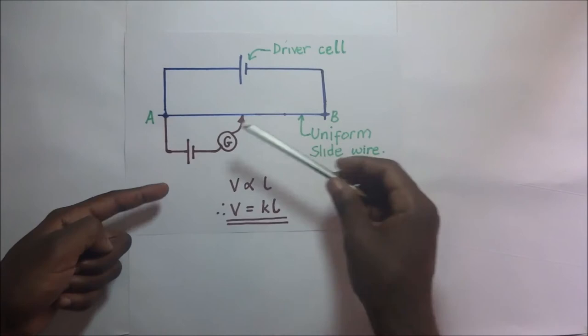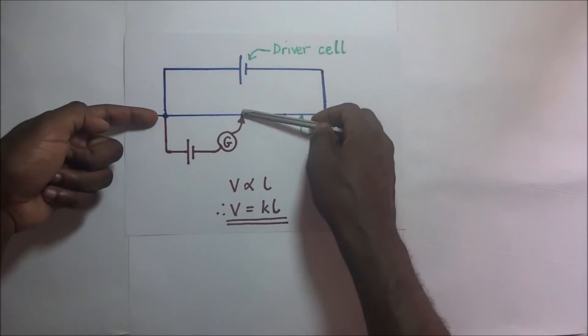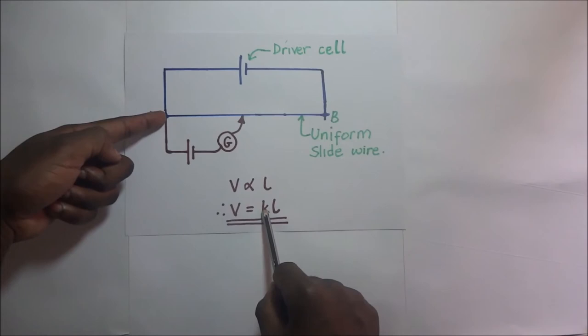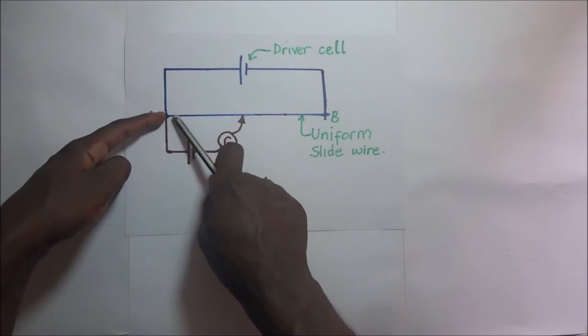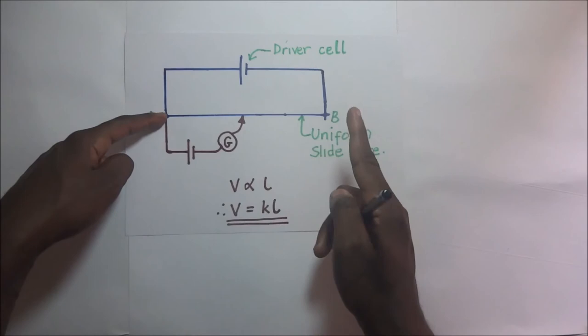Now since the potential difference across the balance length is the same as the potential difference across the components in the secondary circuit at balance, and we know that the potential difference is directly proportional to the length, it means that to get that potential difference value we simply multiply the pd per unit length — which we denote as k — by the balance length. So V = k × l, where k is the pd per unit length.